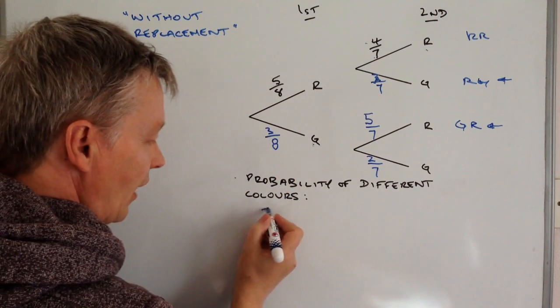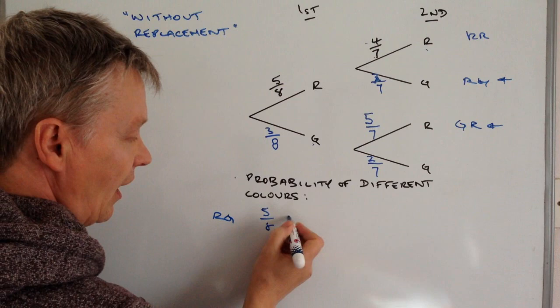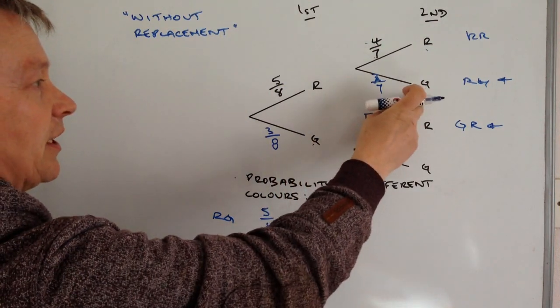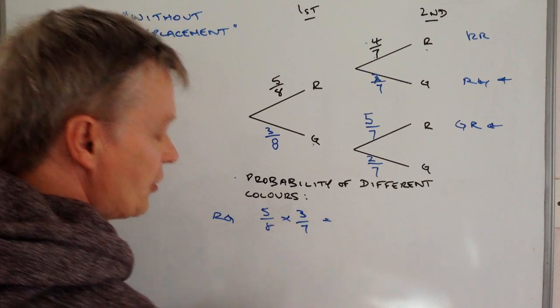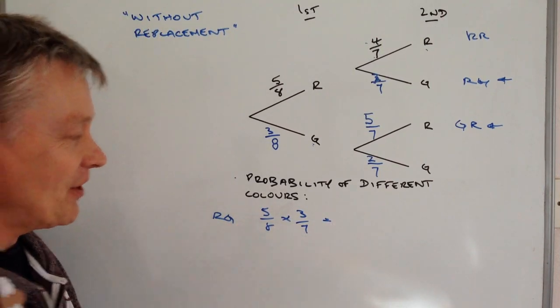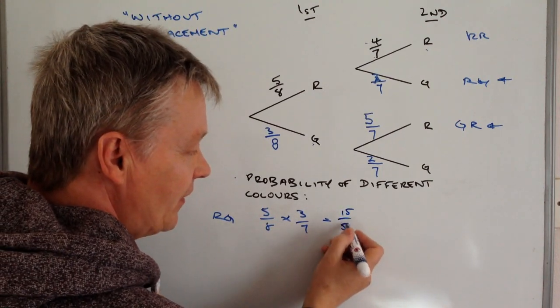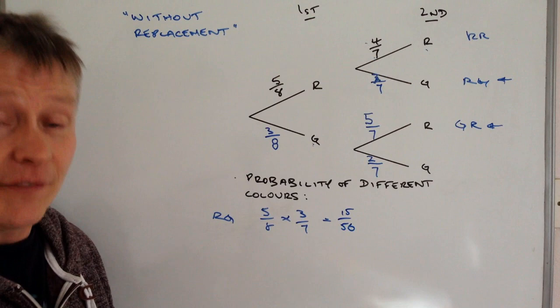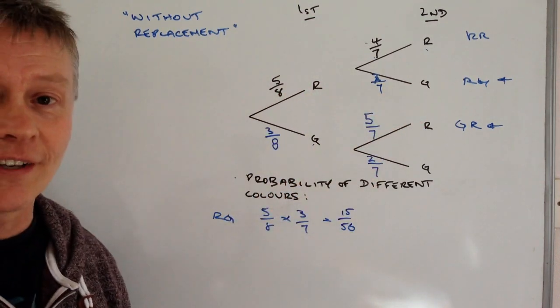Well the probability of taking a red first time round is 5/8, so this is red green, and the probability of taking a green the next time round is 3/7, so the total probability of red green is going to be 5 times 3 is 15 and 8 times 7 is 56. So in other words every 56 times it does this, 15 times is going to get a red and then a green.